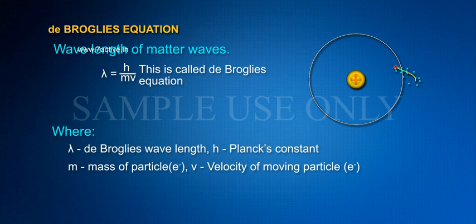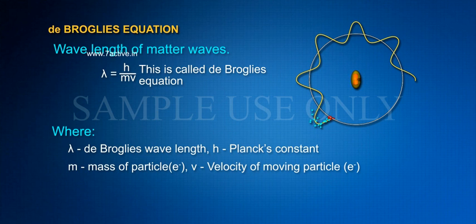Wavelength of Matter Waves. Lambda is equal to h by mv. This is called de Broglie Equation. Where lambda is de Broglie's wavelength, h is Planck's constant, m is mass of particle (electron), v is velocity of moving particle (electron).